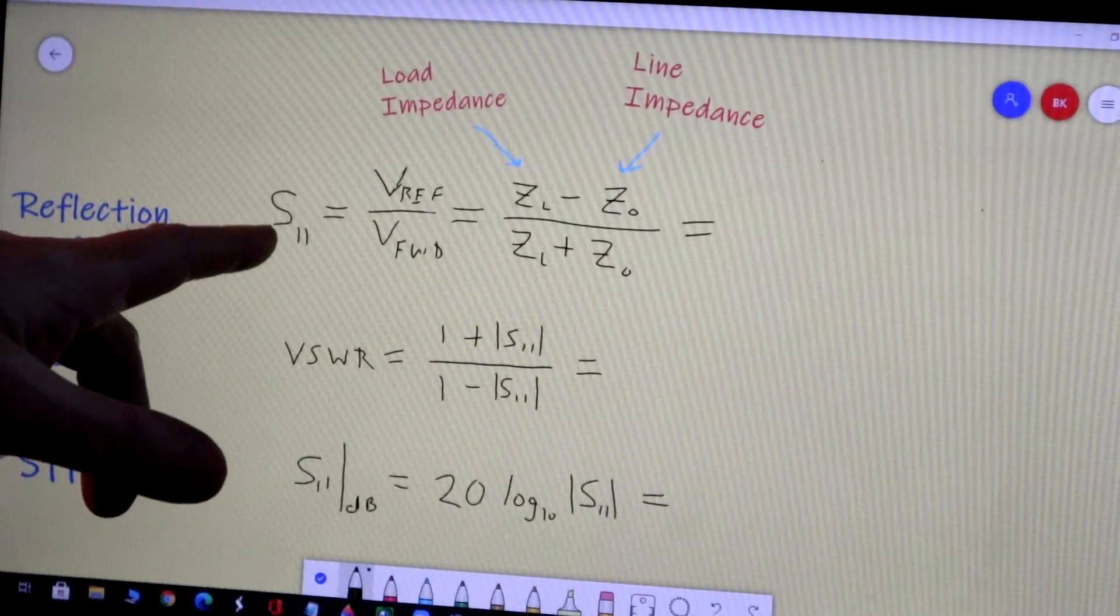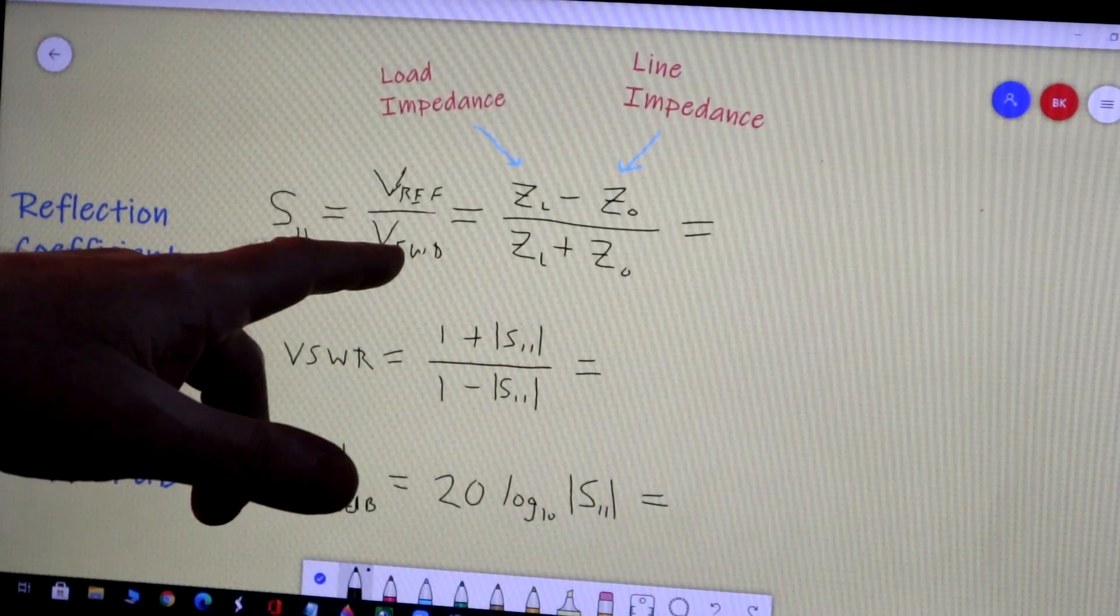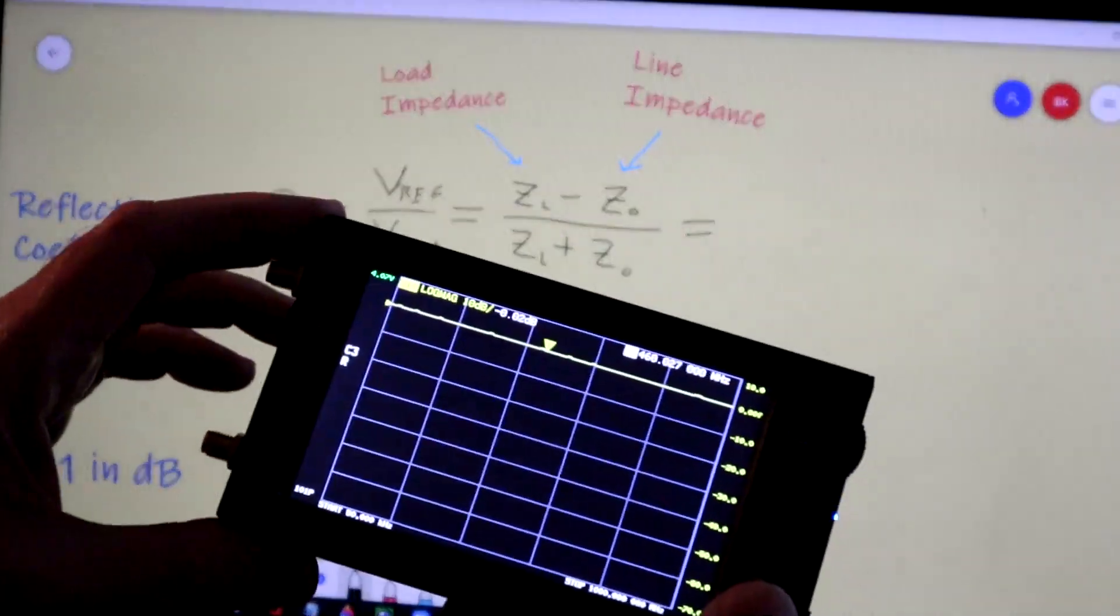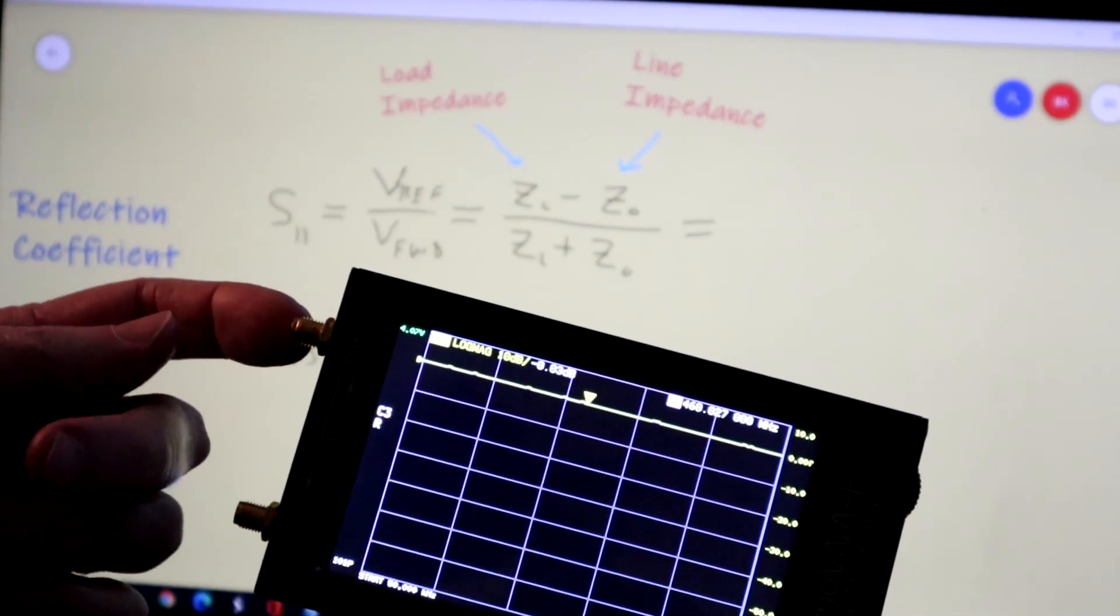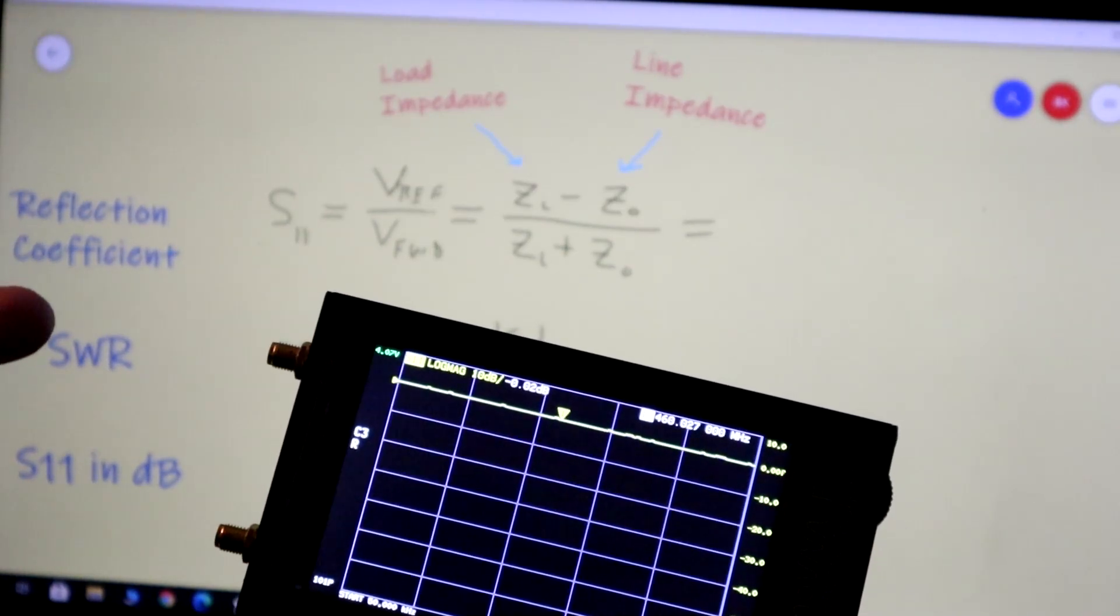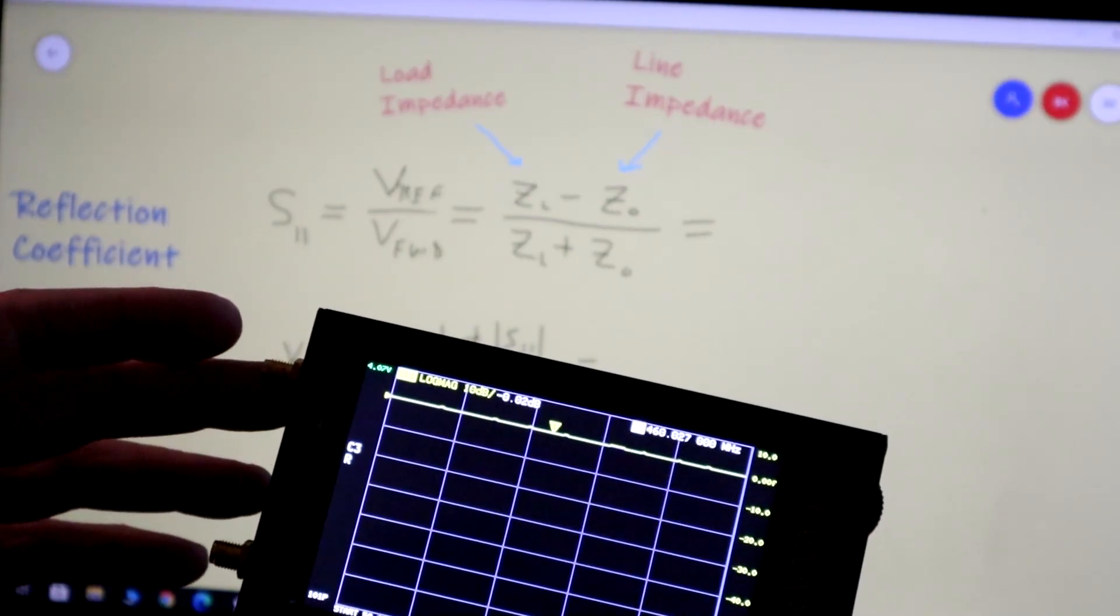So here I've got S11 defined as the reflected voltage divided by the forward voltage. So what that means is in the nano VNA out of port one here, it sends a voltage down a coaxial line to a load and then some of that's going to get reflected, and what it measures is the voltages.